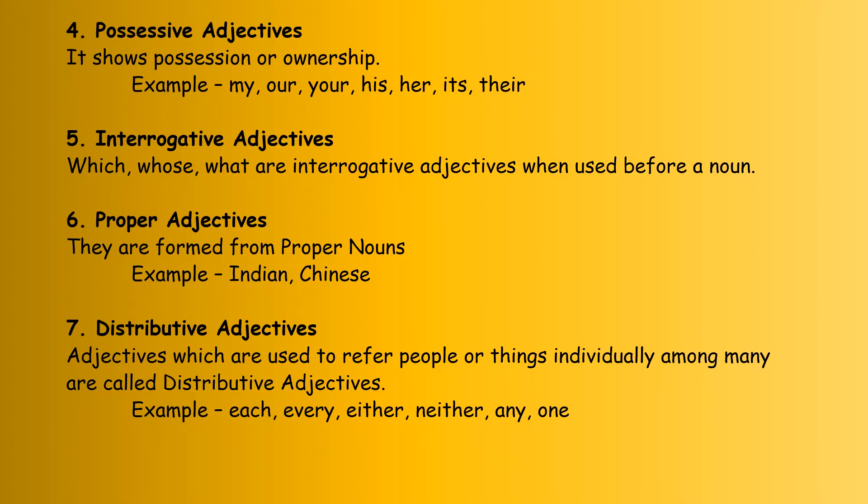The sixth one is proper adjectives. They are formed from proper nouns. Proper nouns are special nouns — for example, India. From India, the proper adjective formed is Indian. Similarly, China is the proper noun and Chinese is the proper adjective.